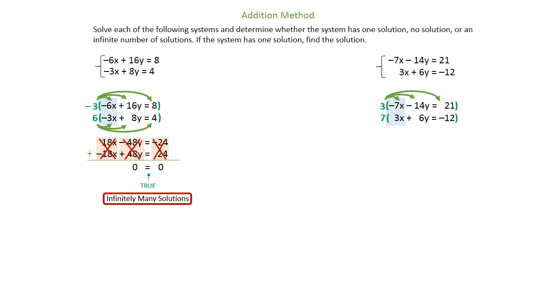The top line, when you multiply it by 3, becomes negative 21x minus 42y equals 63. And the bottom line multiplied by 7 gives positive 21x plus 42y equals negative 84.